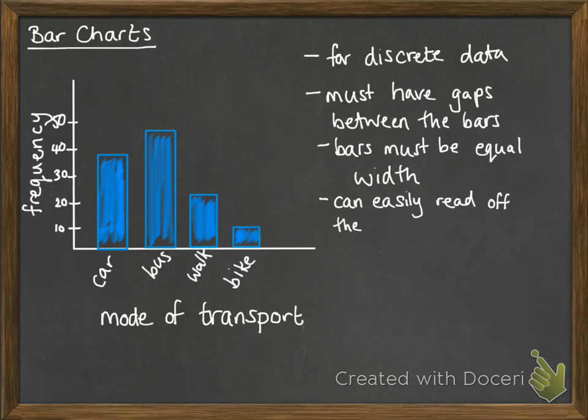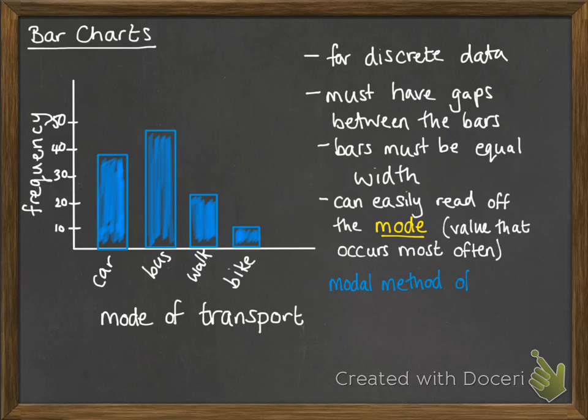They're really only useful for reading off values. We can easily read the mode from the bar chart. It's the value that occurs the most often. So in this case we can read off that the modal method of transport for getting to school is by bus.